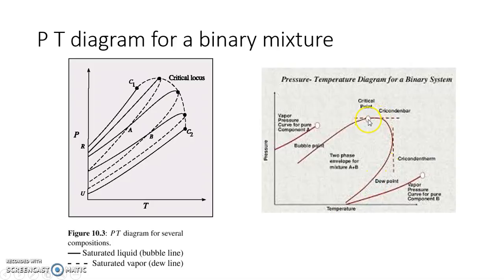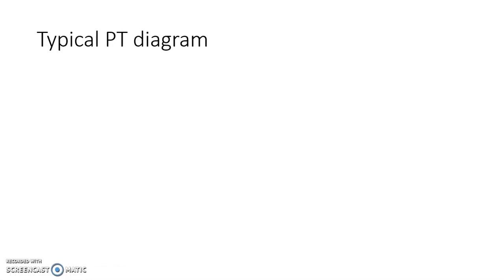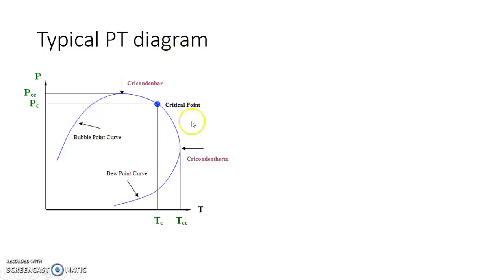This is the critical point. As we have seen and discussed, the critical point for a binary mixture is not necessarily the highest pressure and highest temperature point in the diagram. This point is the highest pressure point, and this point is the highest temperature point. This is known as the cricondenbar point and the cricondentherm point. The critical point can be in between the cricondentherm and cricondenbar.